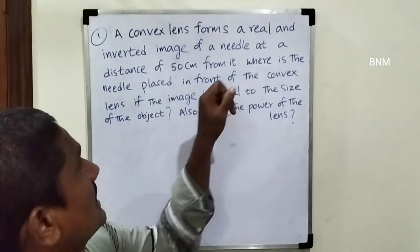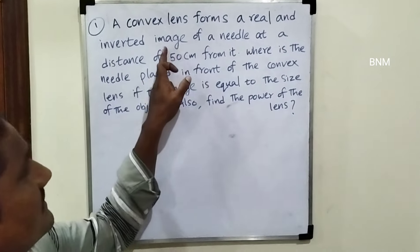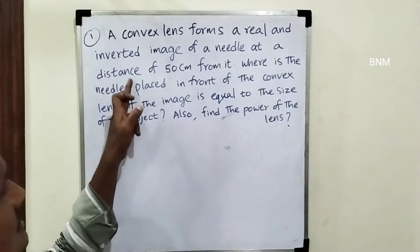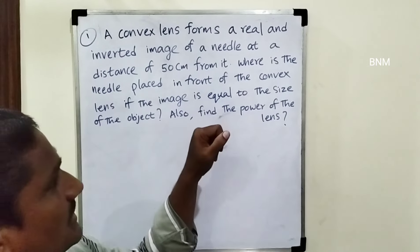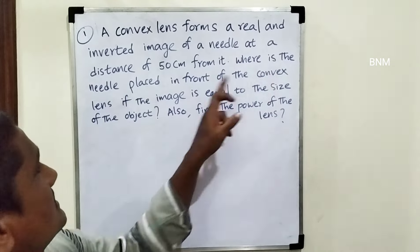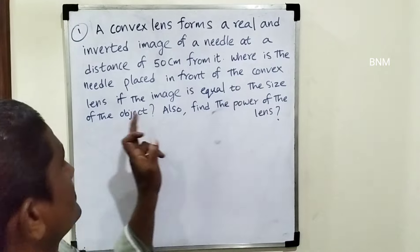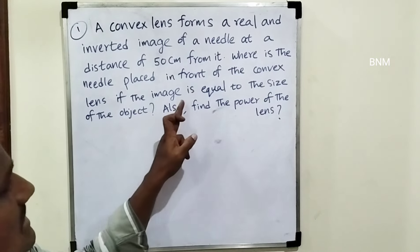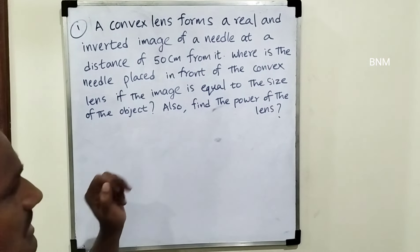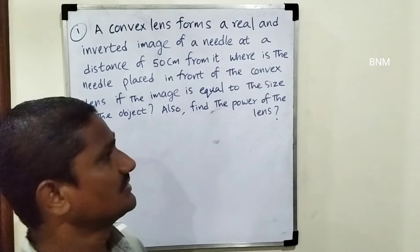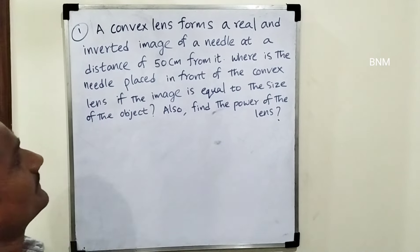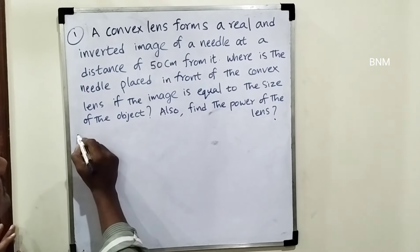A convex lens forms a real and inverted image of a needle at a distance of 50 cm from it. Where is the needle placed in front of the convex lens if the image is equal to the size of the object? Also find the power of the lens.